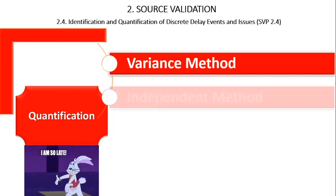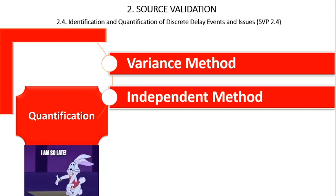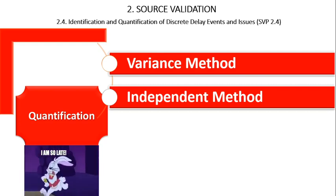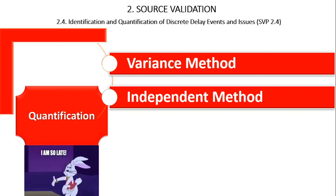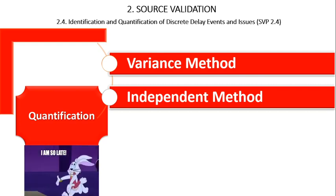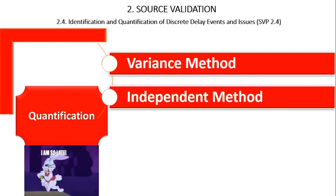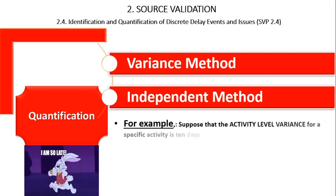In contrast, the independent method is not comparative. The delayed duration is determined from project documentation that contemporaneously chronicled or otherwise recorded the occurrence of the delay, or quantified the impact resulting from a delay event. Under this method, whether causation has been established depends on the type and content of the documentation used for quantification. For example, suppose the activity-level variance for a specific activity is 10 days.